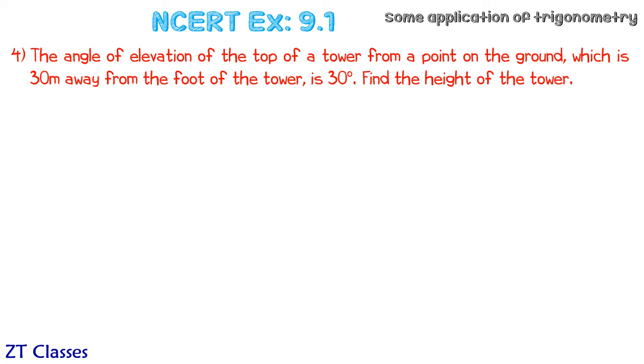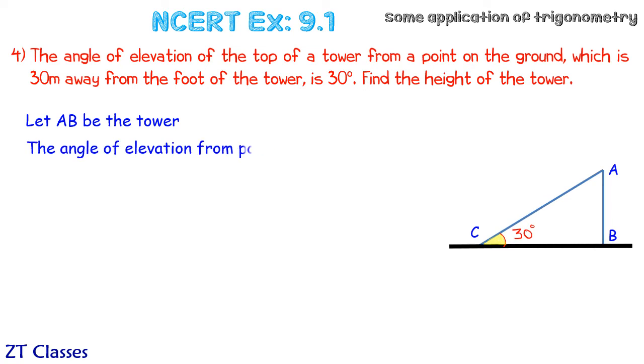Let's do the diagram first. So AB is the tower and let's say the point of observation is C. From point C, the angle of elevation of the top of the tower is 30 degrees.